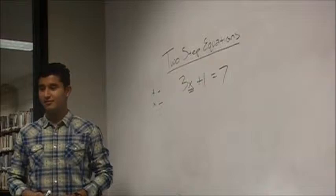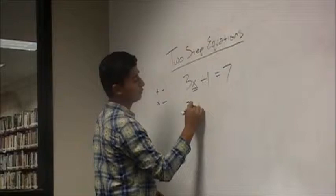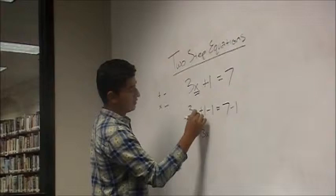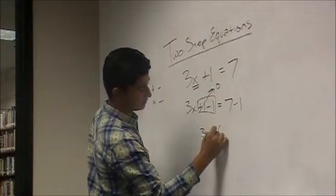Jorge? You subtract the 1. Correct. So, we would be doing 3x plus 1 minus 1 equals 7. And don't forget to subtract on the other side as well. So, we have 3x and this goes off to 0. And that equals 6.